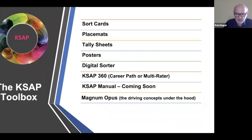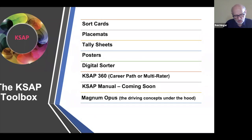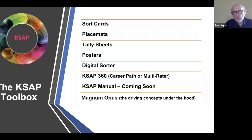The tool has all of the things that LM showed before the other four tools — sort cards, placemats, tally sheets, and posters. We have a couple of 360 options, and then we have something — pending a better term — a Magnus Opus, meaning a cross-coding tool that codes potential into the other four tools and into 21 generic jobs, so you can make a connection between potential and what kinds of individual contributor, manager, and leadership roles they might be best suited for.